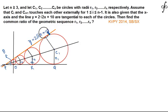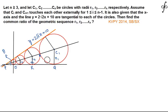The line y = 2√2·x + 10 and the x-axis are both shown. A series of circles are touching both lines and are externally touching each other — a continuous sequence of externally touching circles, each also tangent to the x-axis and the given line. We need to find the common ratio of the geometric sequence r1, r2, r3, ..., rn.